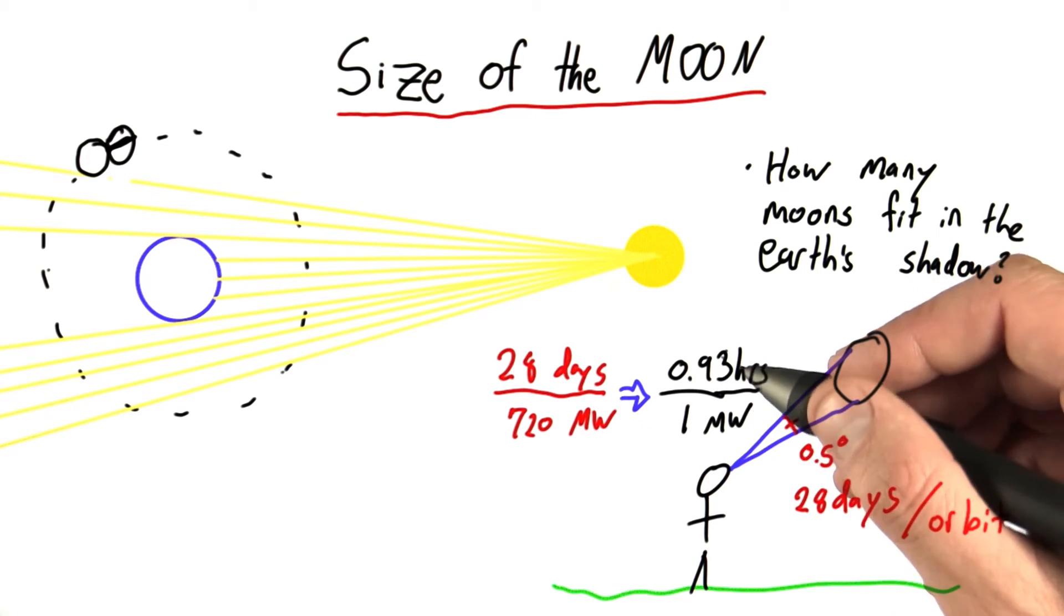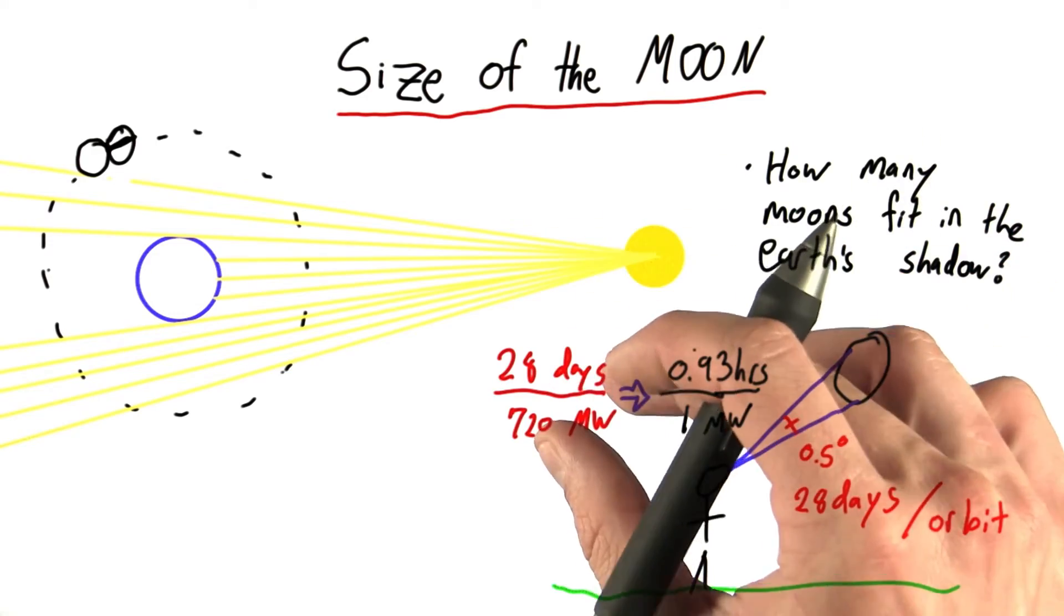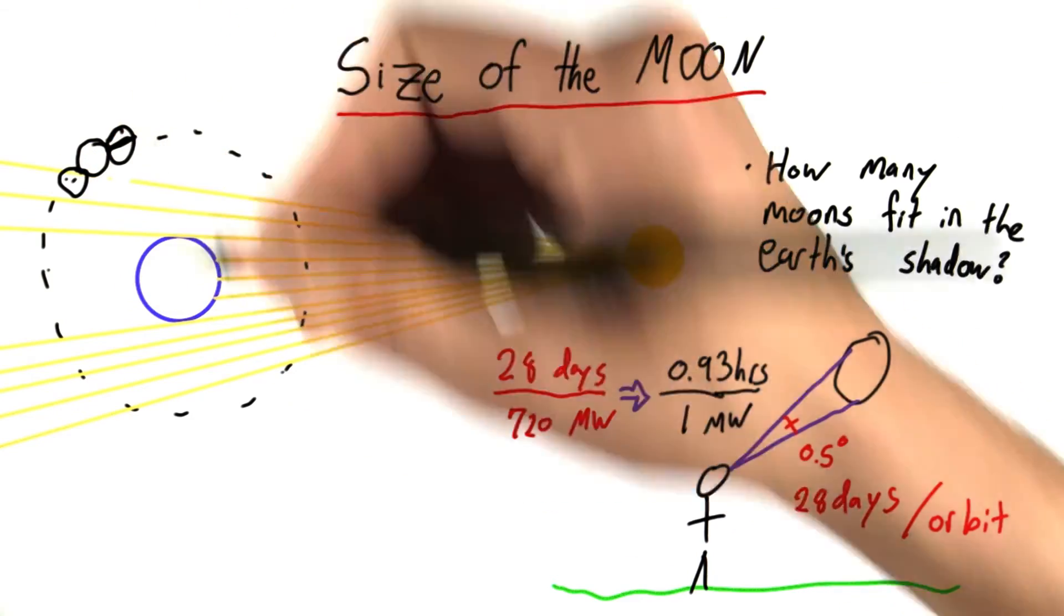So every 0.93 hours, the moon has moved one width over. So it's gone from here to here, or from here to here, et cetera.